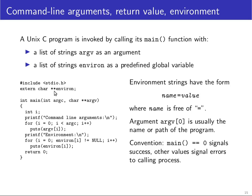In addition, there is an externally defined global variable called `environ`, which is also a list of strings. There isn't a variable saying how many there are — instead, the last string pointer is indicated by being a null pointer. With a loop you can iterate over the `environ` variable to get the environment strings that are passed to every process.